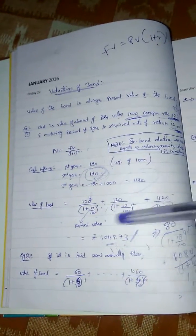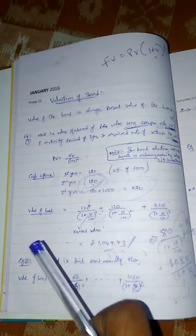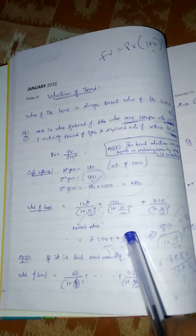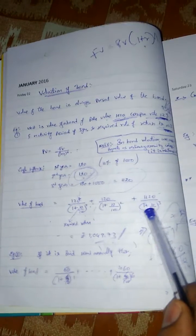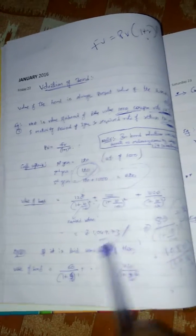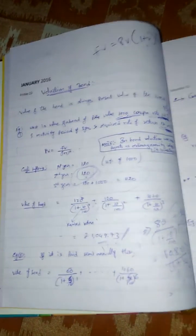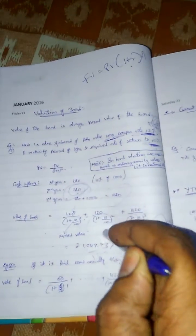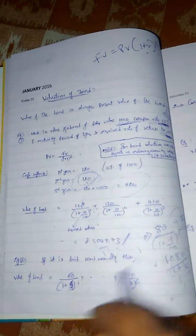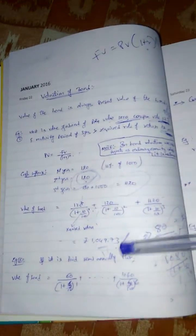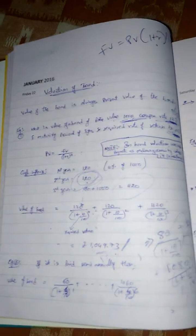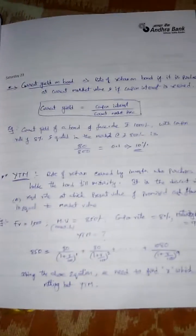The second installment of 120 is received at the end of the second year. Since we are calculating present value at the beginning of the first year, it spans two years, so: 120 divided by (1 + 10/100) squared. Similarly, the last cash inflow of 1120 divided by (1 + 10/100) cubed. Calculating all of these gives 1049.73, approximately 1050. That is the value of the bond — what we need to pay to purchase it in the market. Based on this example, we also discuss bond value theorems.